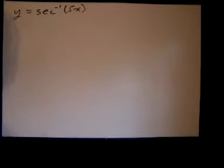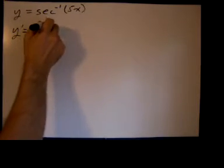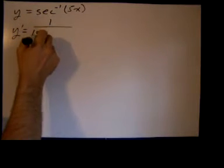We'll have to use the chain rule and the formula for the derivative of the arc secant of x. So we have y prime, the derivative of the arc secant is 1 over the absolute value of the argument, which is 5x in this case,